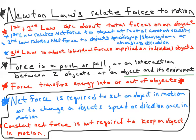Objects can move without force being applied to them. If there's no friction, an object won't slow down — like a hockey puck on ice, it will continue to slide forever. Its velocity won't change, which means its speed or direction won't change, unless you hit it with a force larger than its inertia.